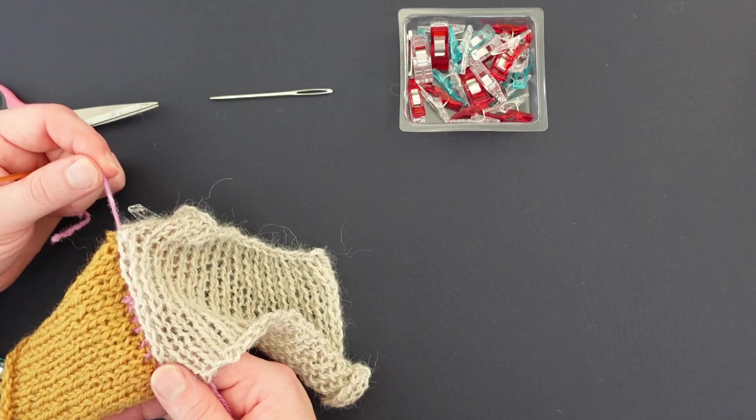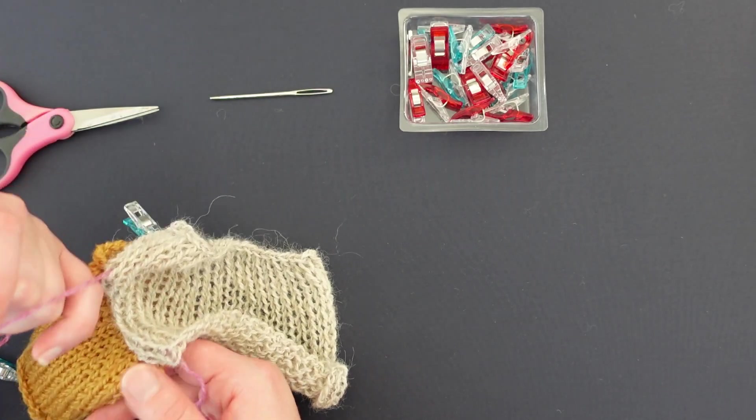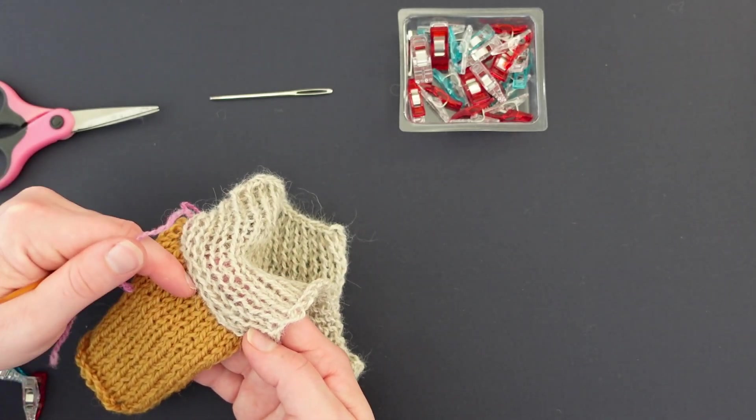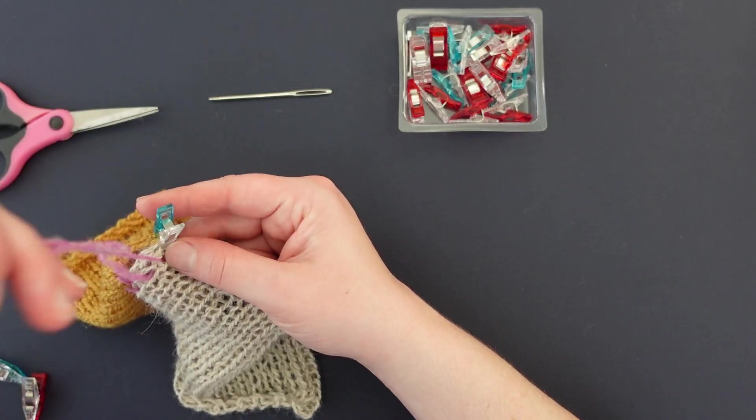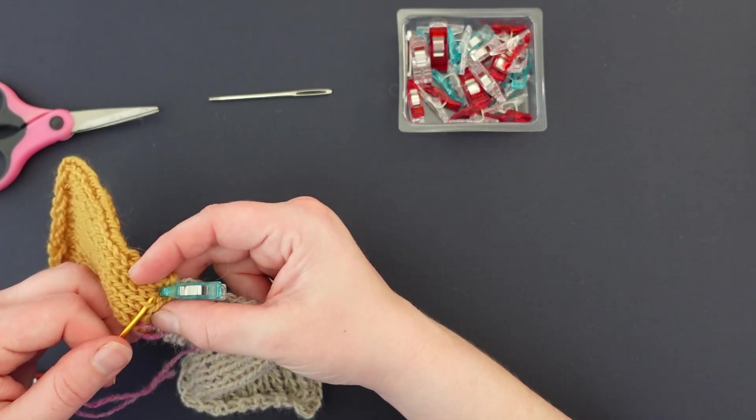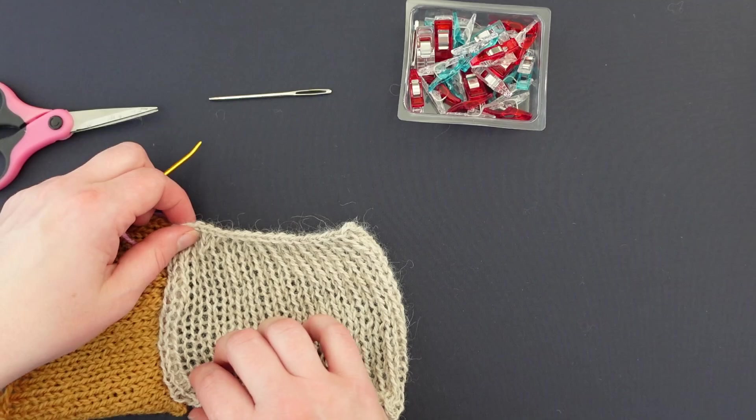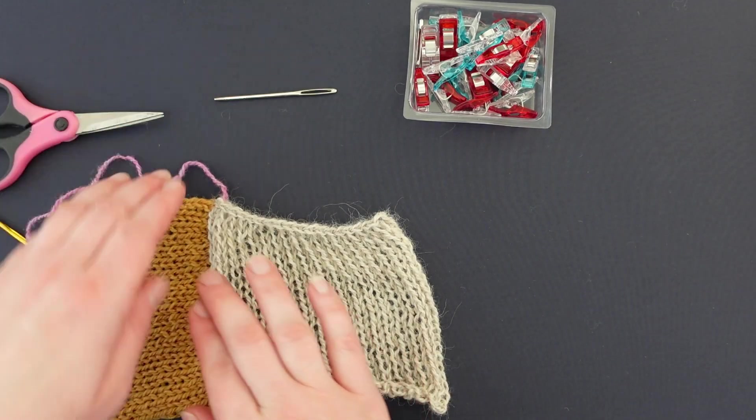I've done about half the stitches here and I want to make sure that I'm going to go ahead and pull that tight. Remember that you don't want to pull this too tight. You don't want it to pucker or ruffle. Being careful to stay in the same column of stitches all the way up. Once I get to the end I'll pull it snug but not too tight and there is my seam at a 90 degree angle.